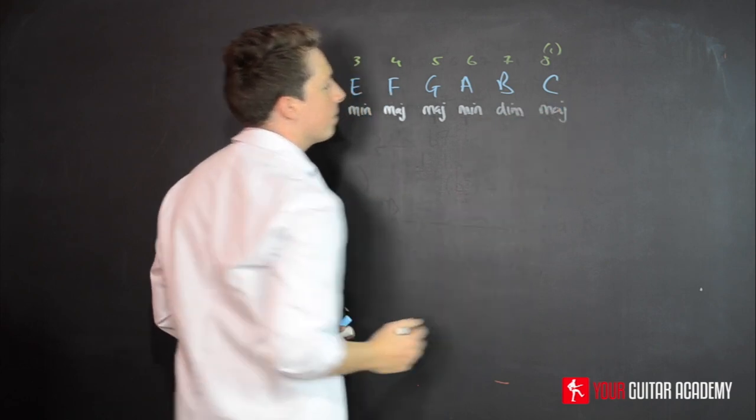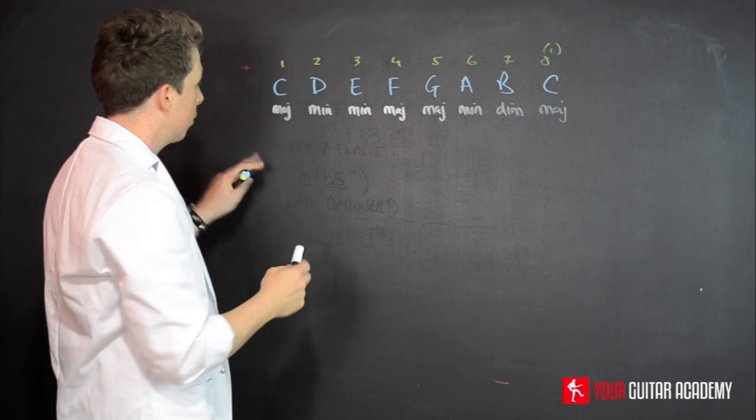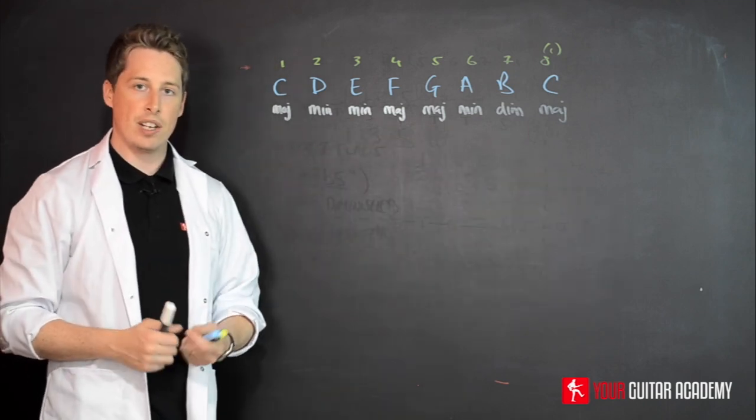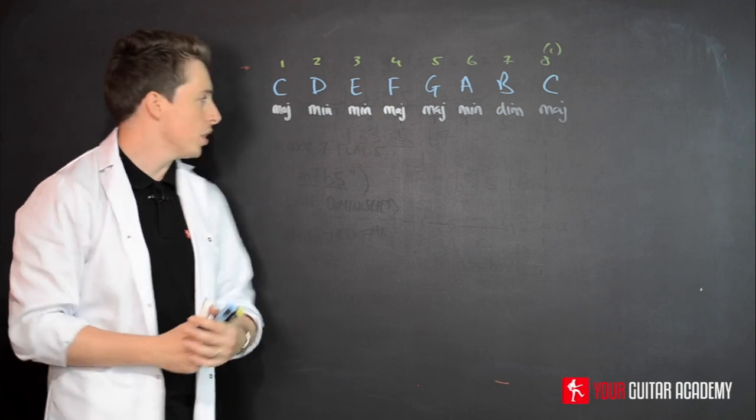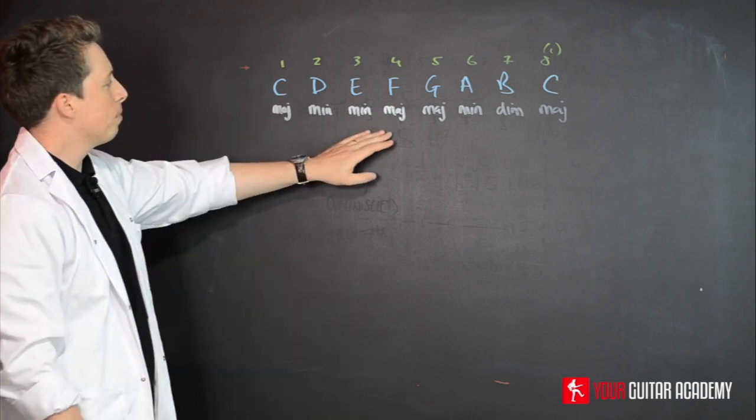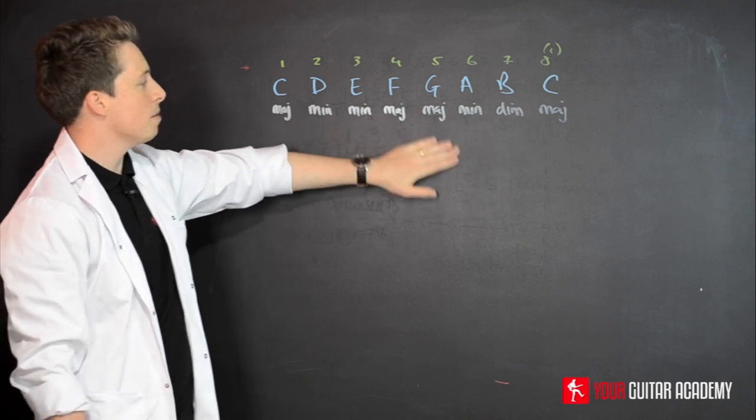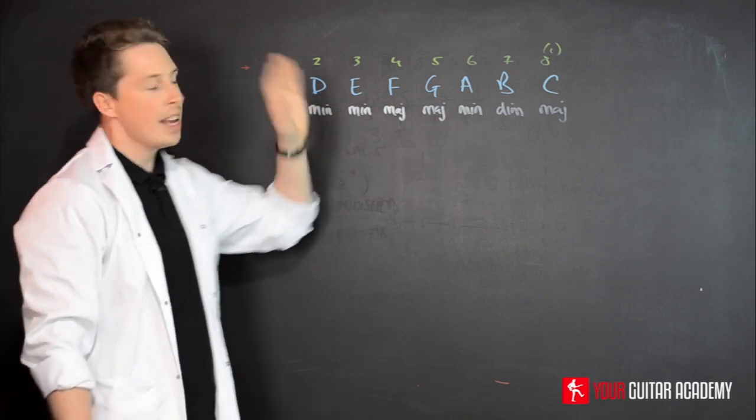So that's our harmonized key of C major. That left us in a really cool position where we said, right, now if I want to put some chords together in the key of C major, I can play an F major, a G major, an A minor, a D minor, E minor in any order